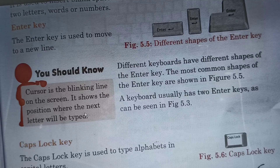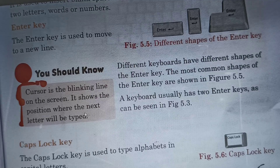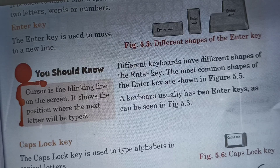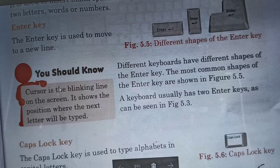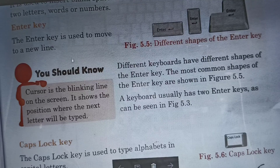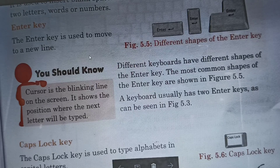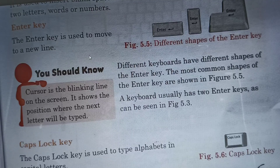You should know: a cursor is the blinking line on the screen. It shows the position where the next letter will be typed. As I am teaching you, you can see the mouse pointer moving on screen. When you start typing, the cursor will appear — it is a blinking line that shows where the next letter will be typed.